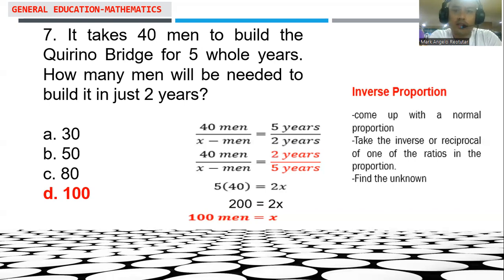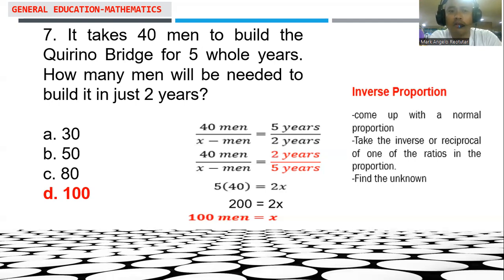The problem is: it takes 40 men to build the Carino Bridge for 5 full years. How many men will be needed to build it in just 2 years? If we solve this using a normal proportion, the answer will be illogical, because the result would give a lesser number of men — but fewer men cannot build the bridge faster.